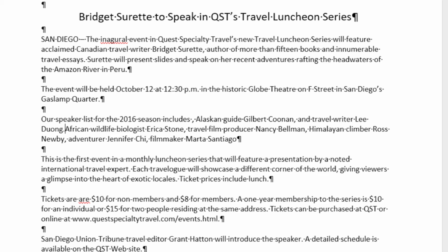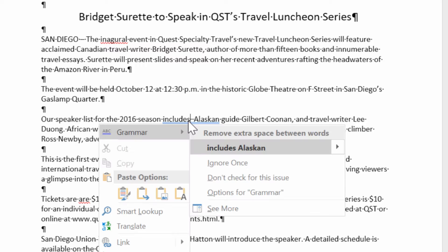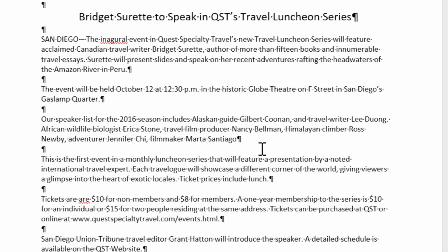I'll select that option and it adds the sentence back where I want it. I'll hit the spacebar to add a space between the period and 'African.' There's an extra comma, so I'll backspace that out. It's still giving me a grammar error — I'll right-click and it says there's extra space, so I'll select the option to remove it. Now we're good.